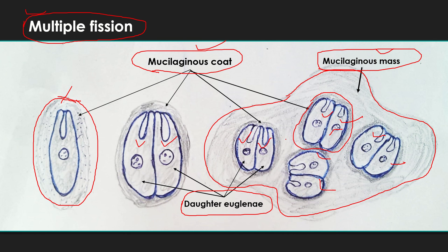Later on, these daughter individuals acquire flagella and escape to grow into adult Euglenas. After division is completed and favorable conditions return, the Euglenas acquire flagella, come out of the mucilaginous mass and coat, and form adult individual Euglenas.